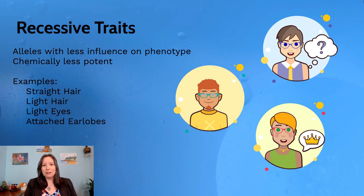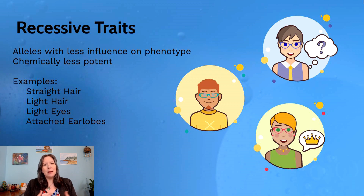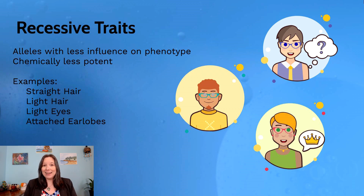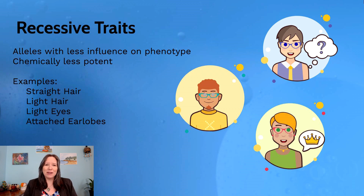We also have recessive traits — alleles that are just less potent and less likely to influence the phenotype when compared to a dominant allele. You can certainly still have recessive traits influence your phenotype, but it especially happens when you have two of them. So if you have two codes for straight hair, you'll more often than not have straight hair. Similarly, light hair, light skin, light colored eyes, and attached earlobes — the type that curve down right into your head without much dangle — are all examples of recessive traits.